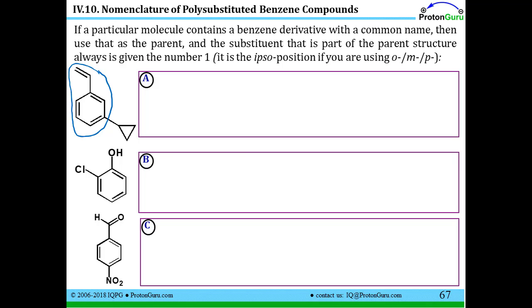I want to point out that when you're naming polysubstituted benzene compounds and you see one of these structures within the structure, you need to use that structure as the parent chain. So I'm going to call this something styrene, not something benzene. So I'm going to always give the number one substituent also to the group that made it styrene, or in this case phenol, or in this case benzaldehyde.